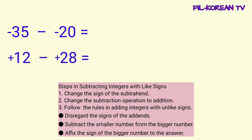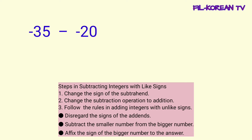Let's answer now the problems. The first example is negative 35 minus negative 20. Ang subtrahend ay negative 20, at ang minuend ay negative 35.